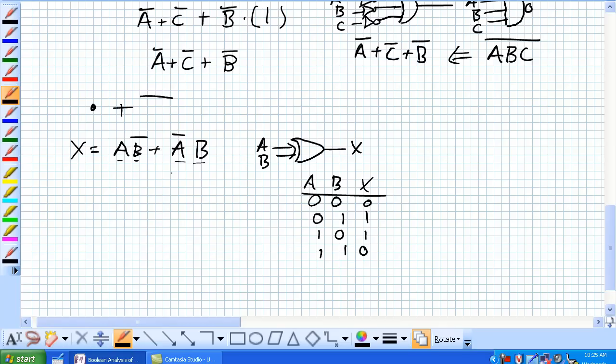But now check this out. We want to know what the exclusive NOR is. A, B, let's call this Y. So the exclusive NOR, well, it's the negation of the exclusive OR. So that's the exclusive OR, here's the negation of it. OK.